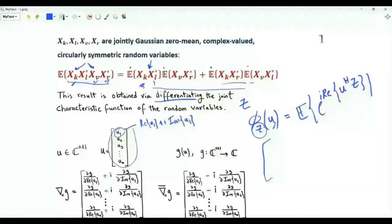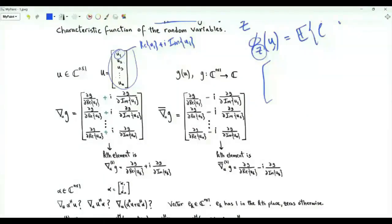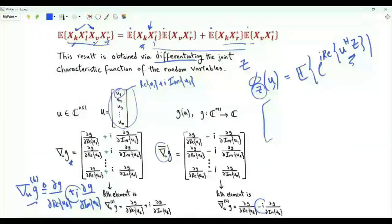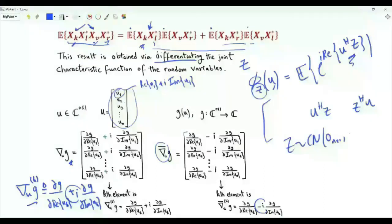How will we carry out the differentiation process? We differentiate with respect to the components of vector u, but each component in vector u is complex-valued. If g is a function of u, we define nabla sub u of g with superscript k. This is the partial derivative of g with respect to the real part of u_k, plus i times the partial derivative of g with respect to the imaginary part of u_k. If we put a bar, we replace the plus i by minus i. From the definition of the characteristic function, we are interested in functions g that look like u Hermitian z or z Hermitian u.